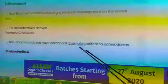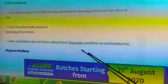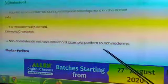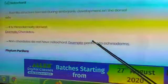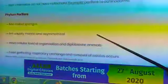Next is non-chordates do not have notochord. So non-chordates do not have notochord. Examples: porifera to echinoderms. In next video, we will study about phylum Porifera.